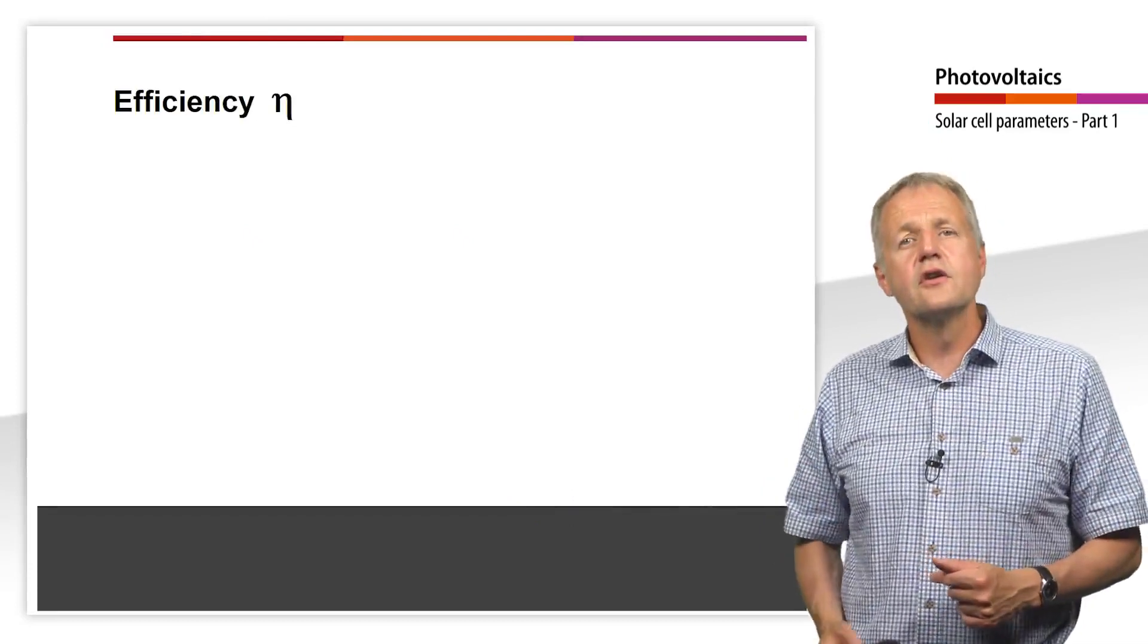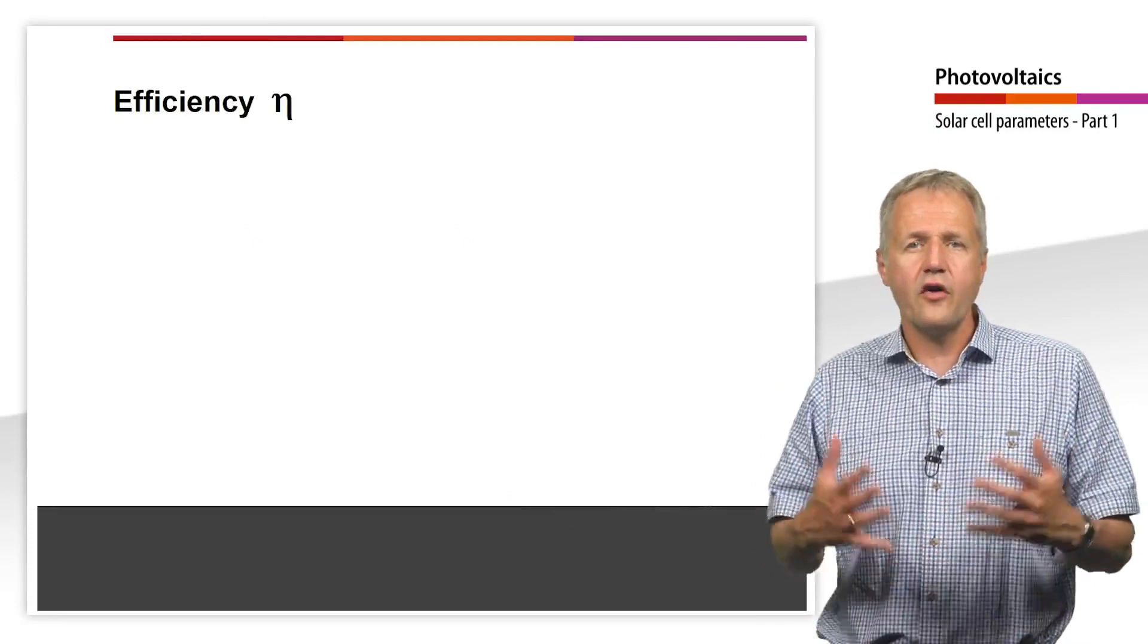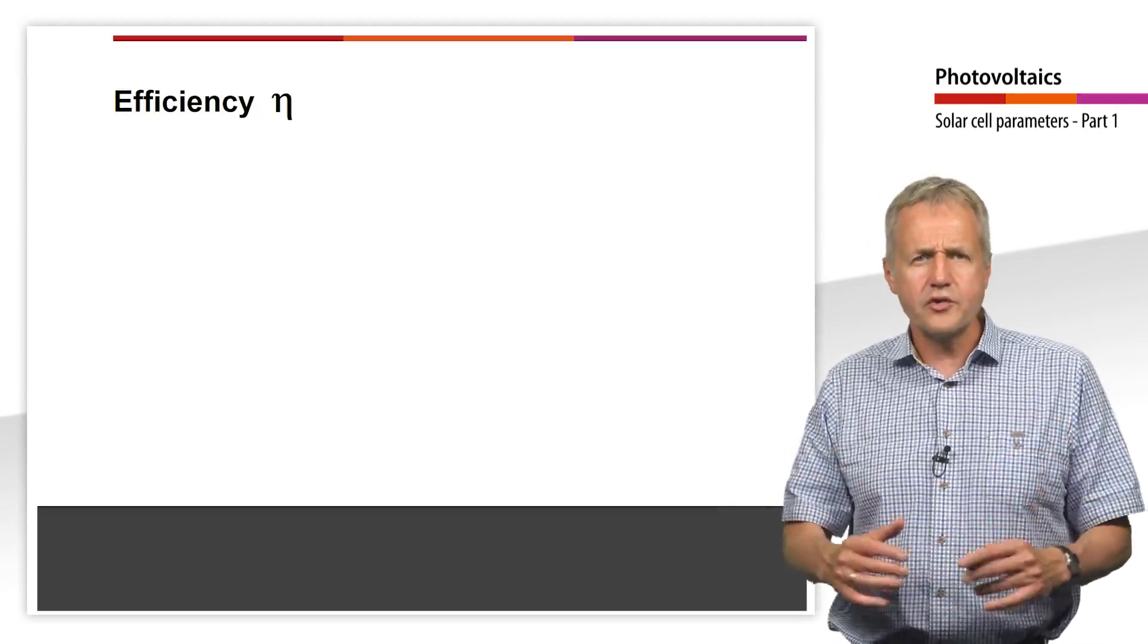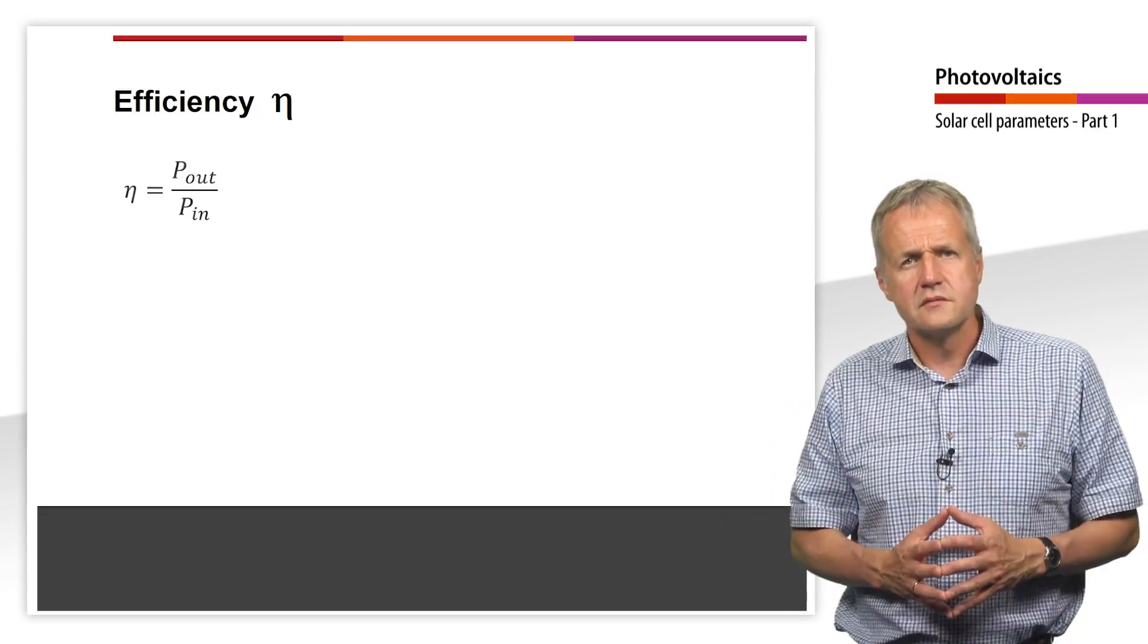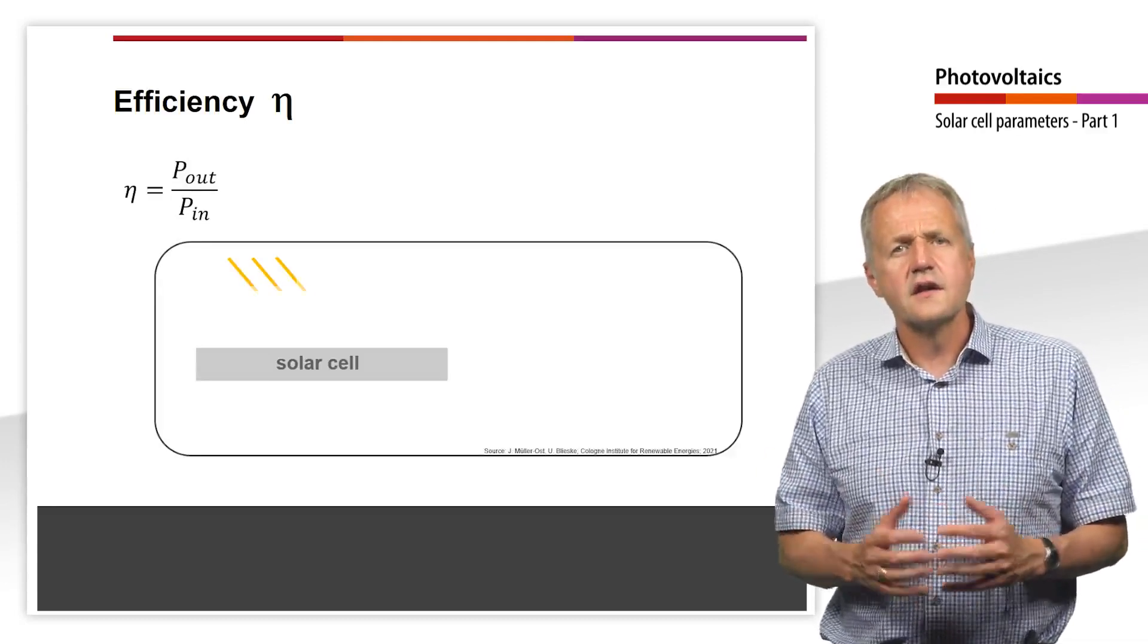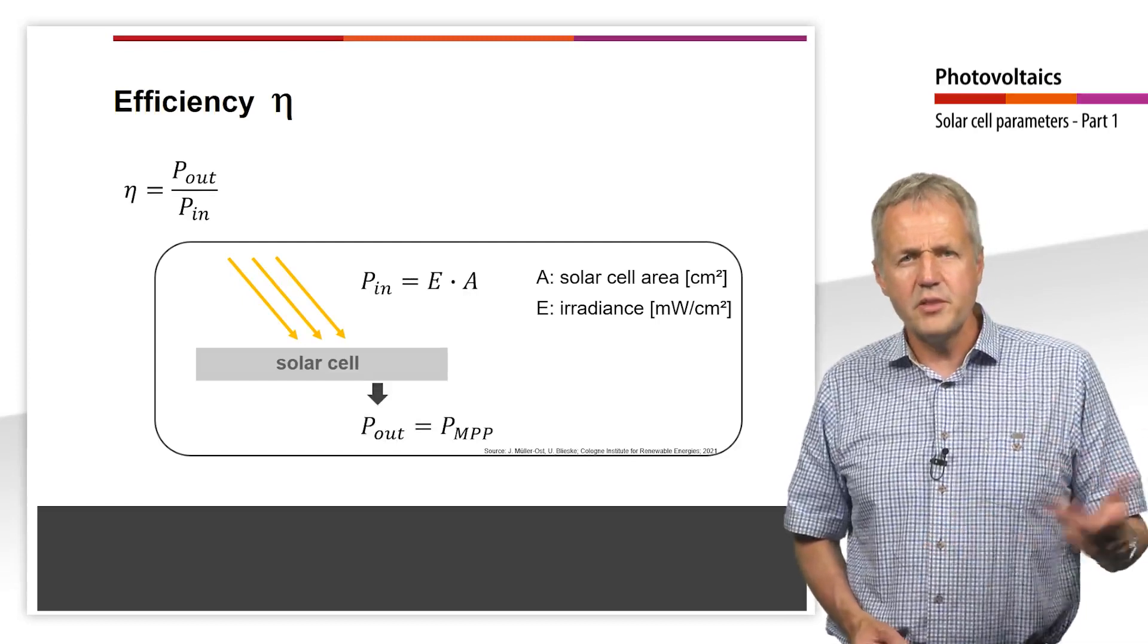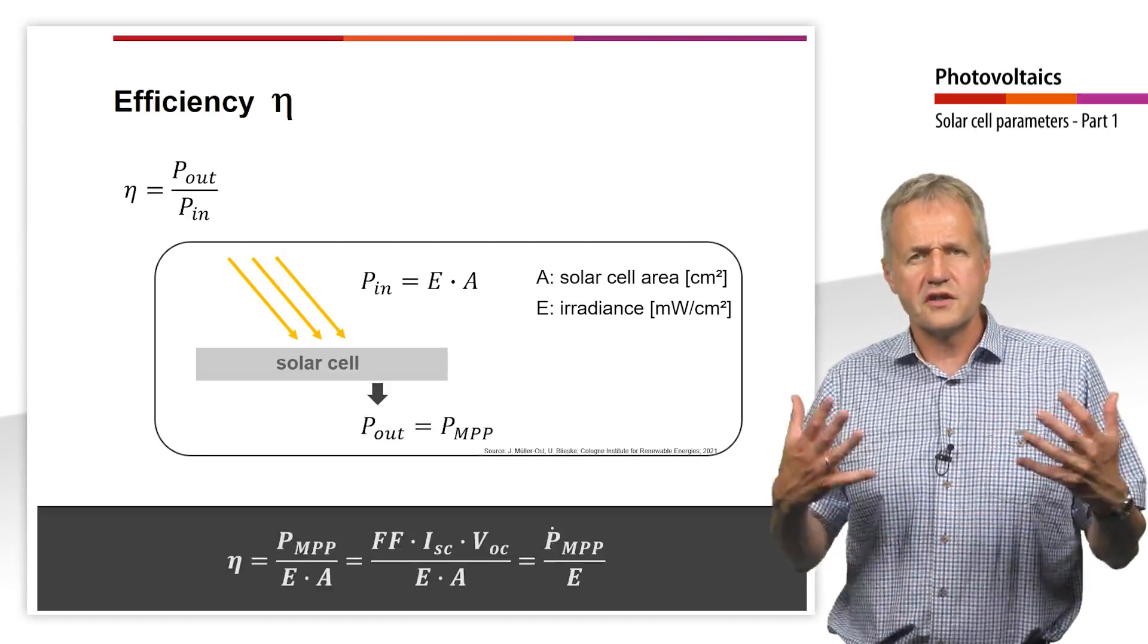Besides the fill factor, the solar cell efficiency is an important parameter to compare the performance of one solar cell to another. It is defined as the ratio of power output from the solar cell to the power input from the Sun. The input power is the solar irradiance on the solar cell. The maximum possible output power is the power in the MPP. The MPP power can be replaced by the product of fill factor, open circuit voltage, and short circuit current.